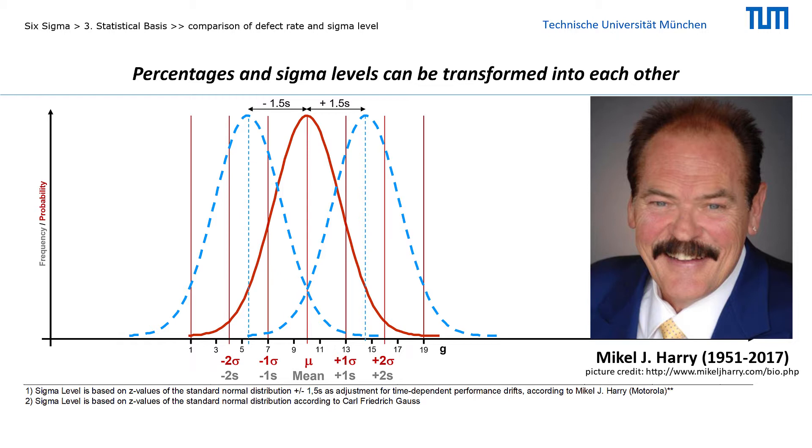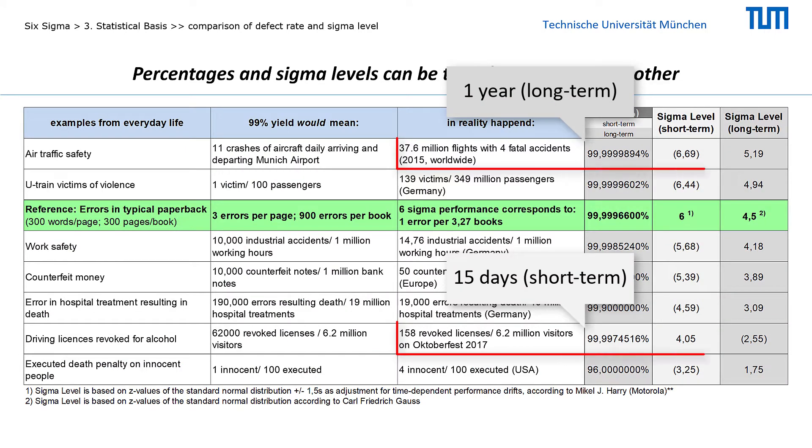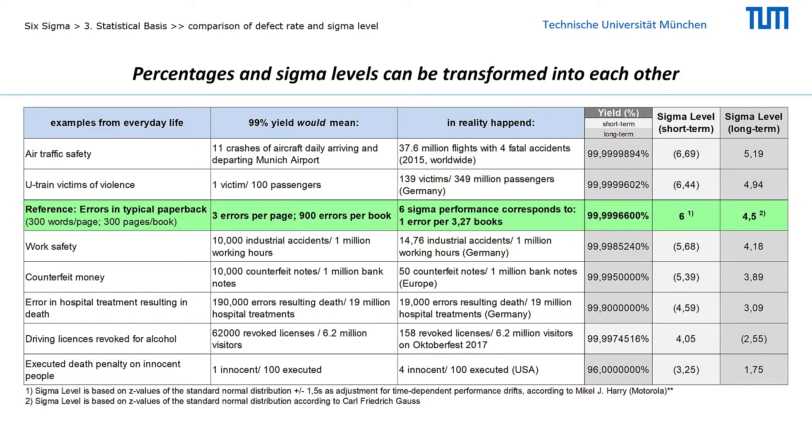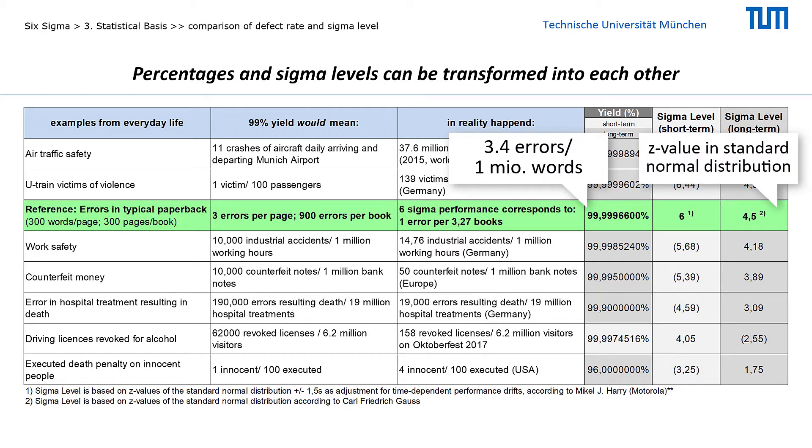Michael Harry, the architect of Six Sigma at Motorola, introduced appropriate adjustments to the sigma levels by distinguishing between measurements over a short versus a long time interval. The assignment to long-term versus short-term depends on the actual drift of the measured values over time. The 3.4 ppm from the standard example of Motorola corresponds to a z-value of 4.5 in the standard normal distribution according to Carl Friedrich Gauss. Michael Harry suggests maintaining this level of 4.5 sigma if data are based on long-term measurements. However, if this data is to be compared with data from a short-term interval, then 1.5 standard deviations is added. Thus, the 3.4 ppm corresponds to 6 sigma for short-term and 4.5 sigma for long-term measurements.